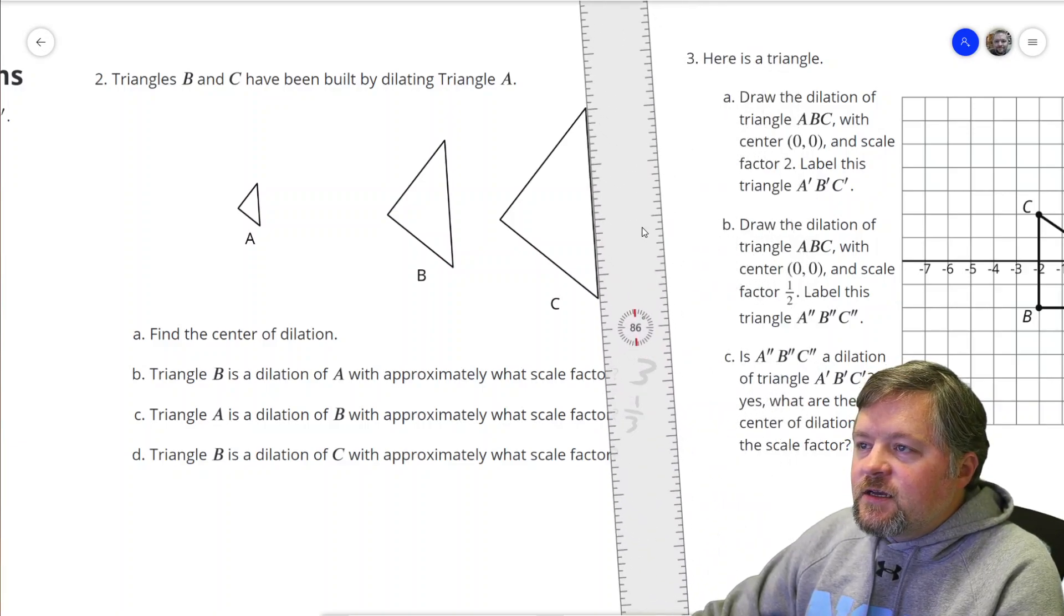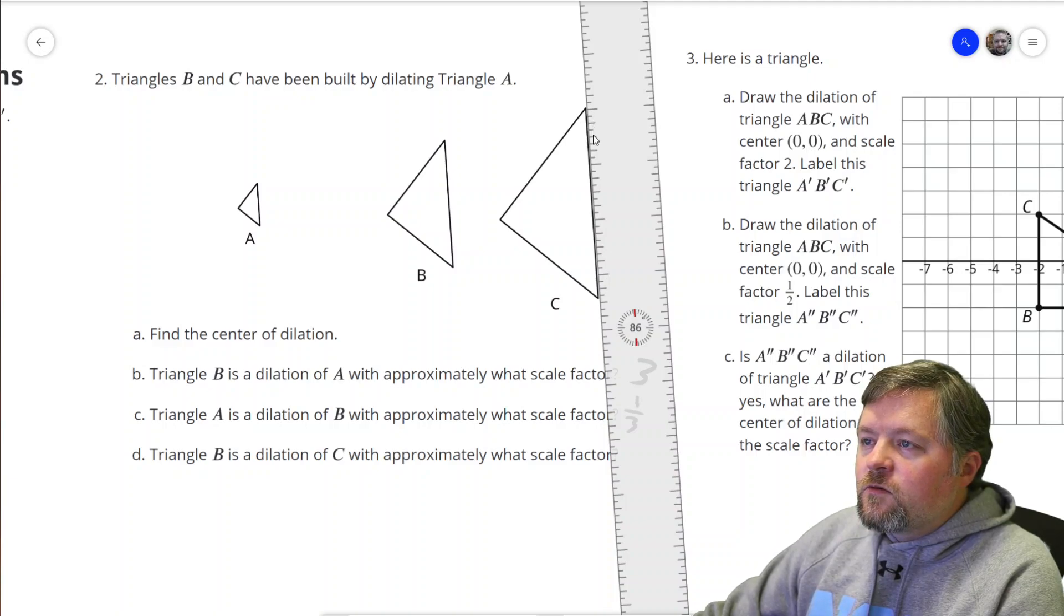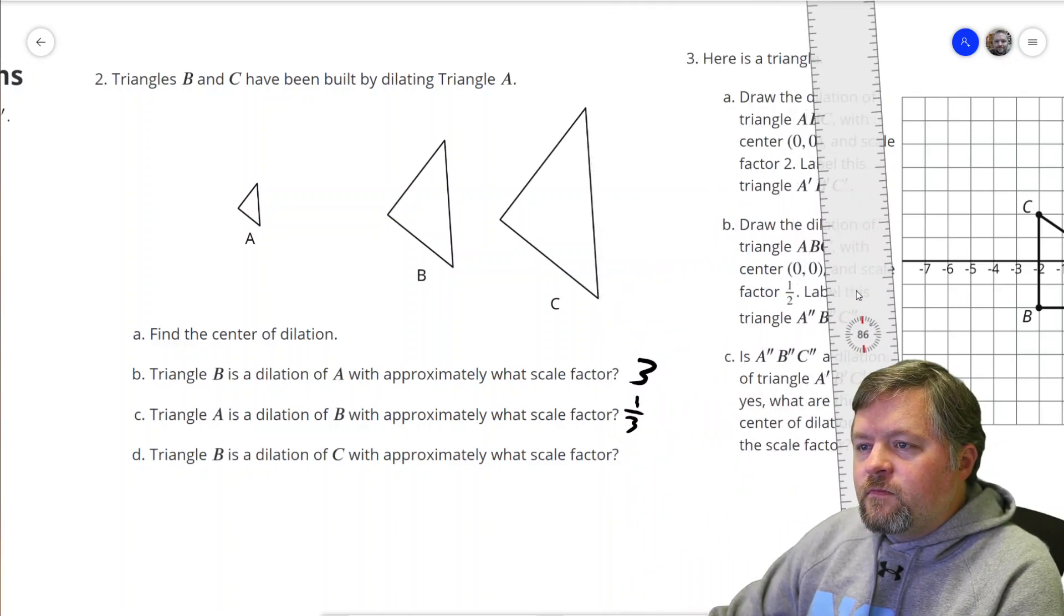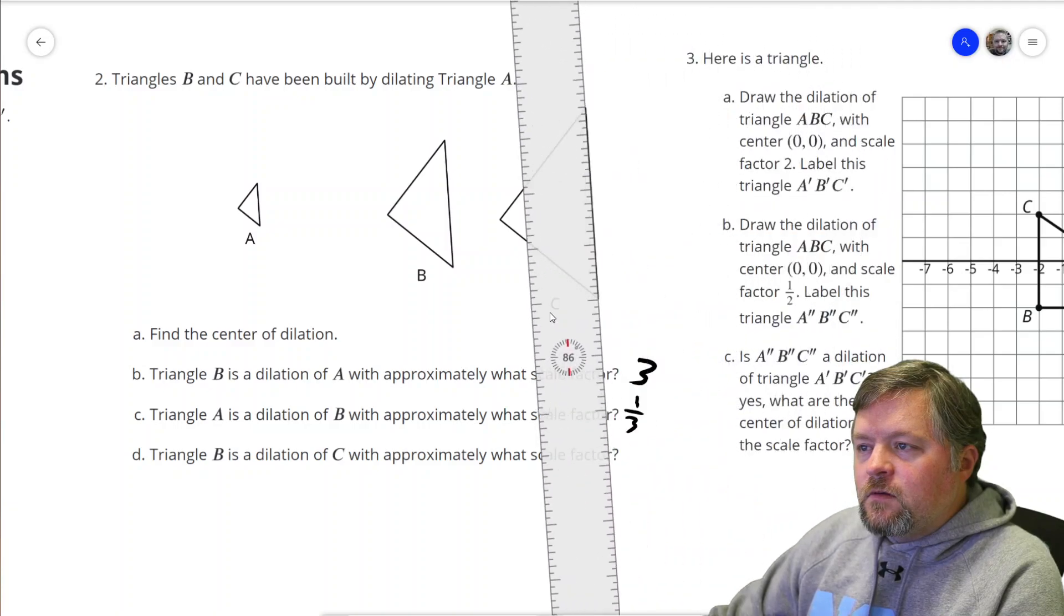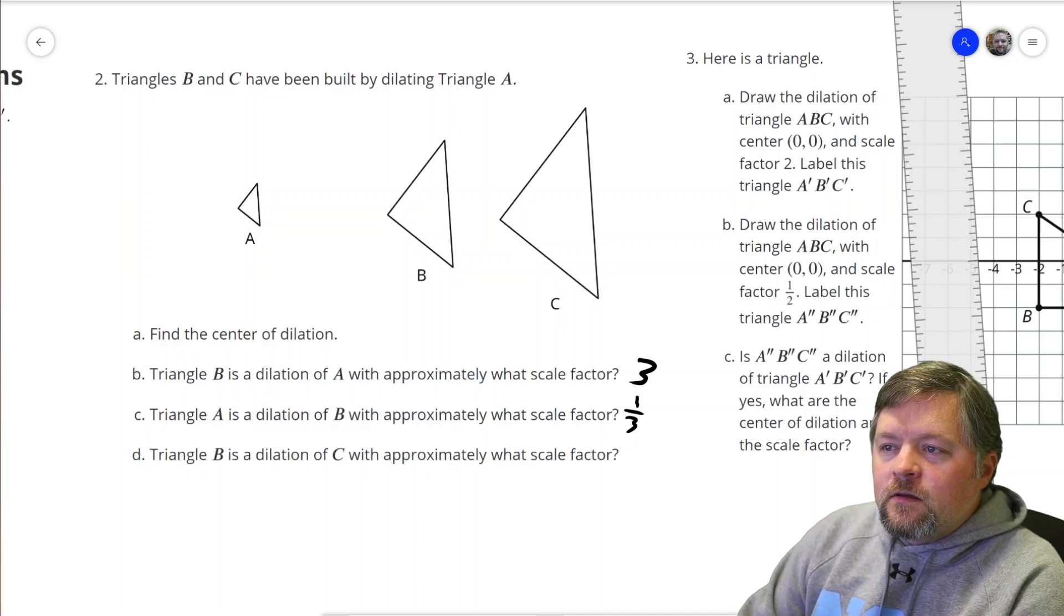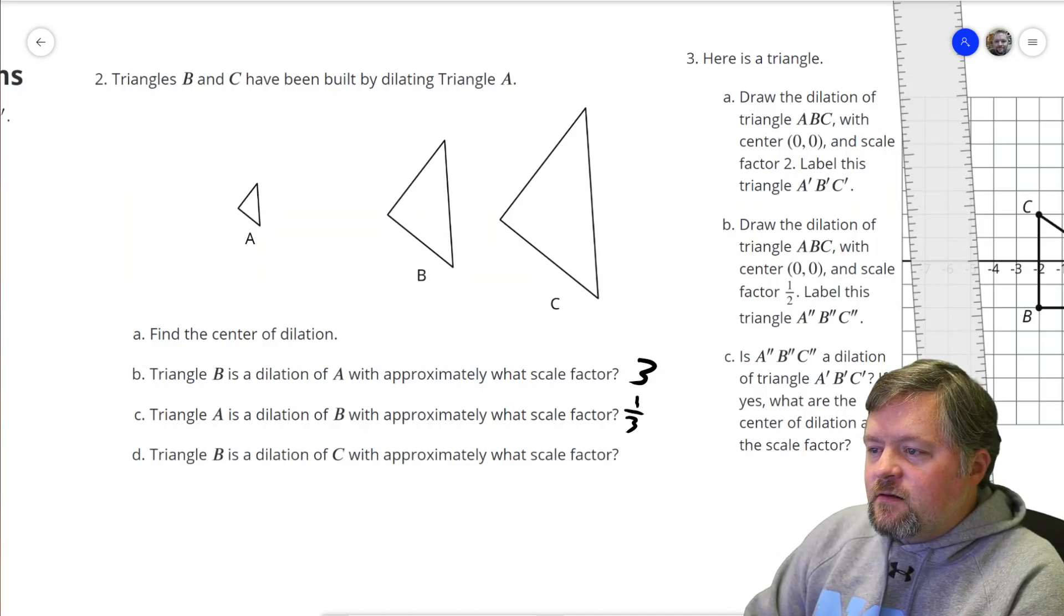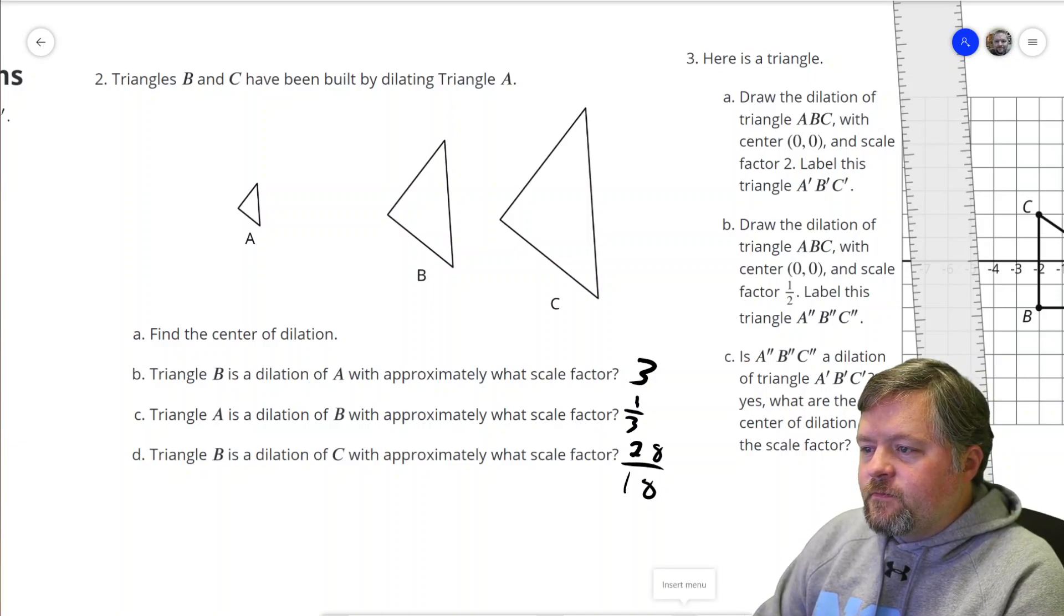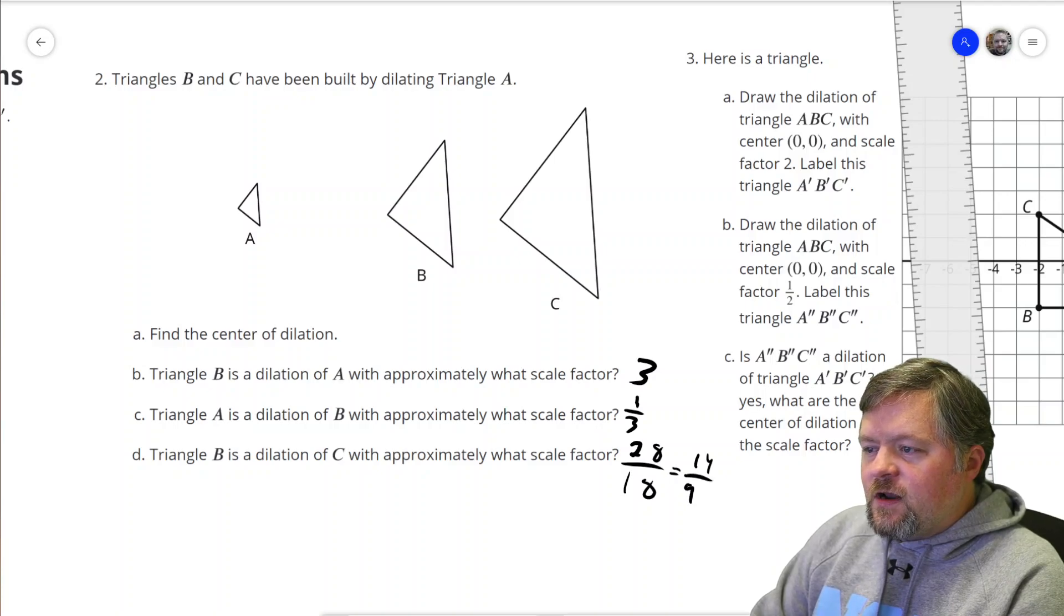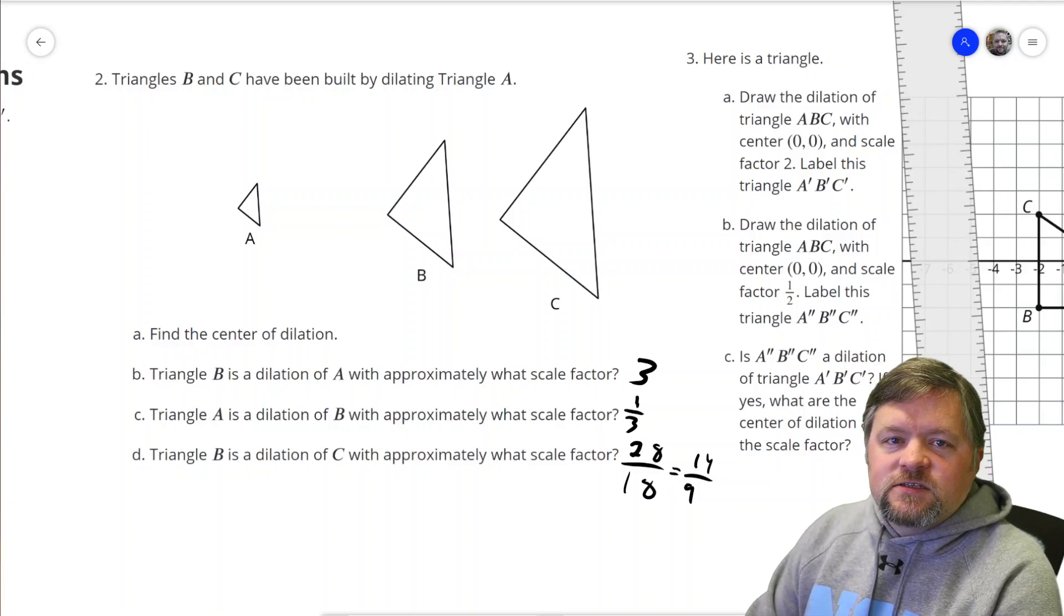And what about C? [Counting from 1 to 28 along the side] So that looks like we're turning 28 into 18. So it should be approximately 28 over 18, which would be 14 over 9. You should get a scale factor that's approximately that.